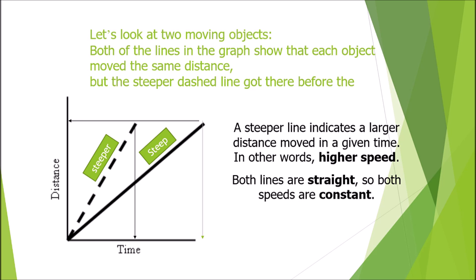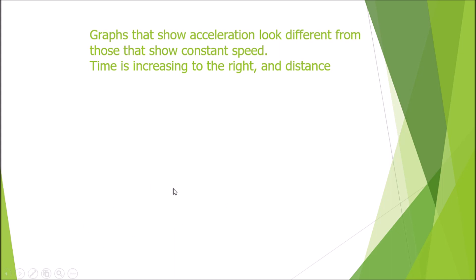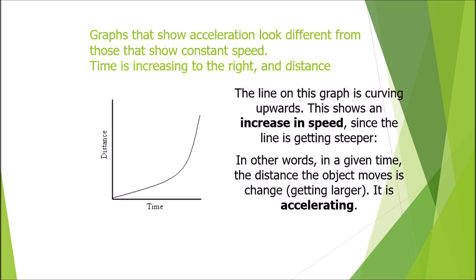Graphs that show acceleration look different from those that show constant speed. Here on this distance-time graph, the line is curving upward. This shows an increase in speed since the line is getting steeper — it was less steep but then gradually became more steep. This means the speed is increasing, so the object is accelerating.